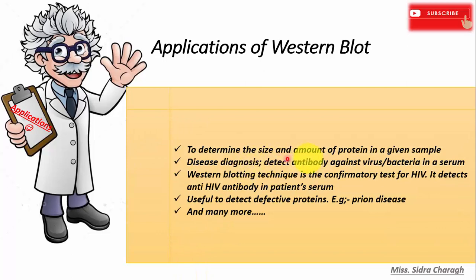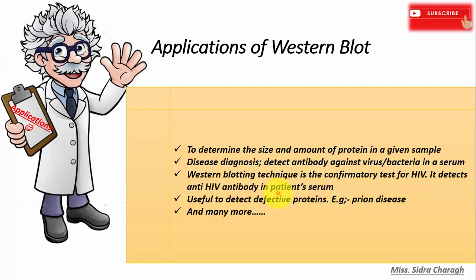Applications of Western blotting: it can be used to determine the size and amount of protein in a given sample. It is also used to diagnose diseases and to detect antibodies against viruses or bacteria in a serum. Western blotting is the confirmatory test for HIV and detects anti-HIV antibody in the patient's serum. It is also useful to detect defective proteins, for example in prion diseases.